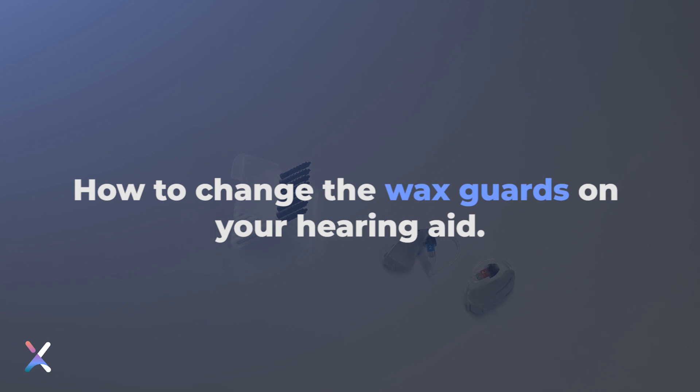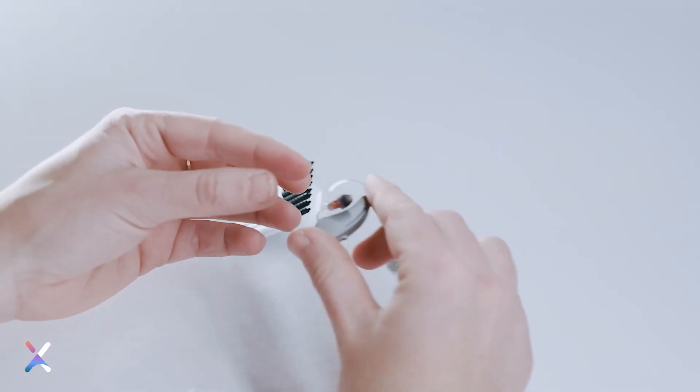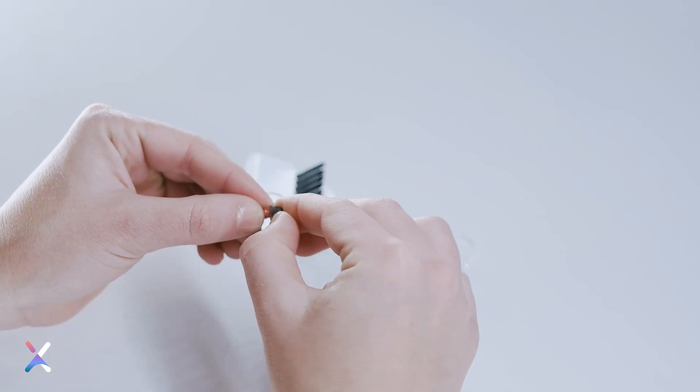How to change the wax guards on your hearing aids. A wax guard replacement tool is included with your new replacement wax guards. In order to replace your wax guard, begin by removing the dome from your hearing aid at the end of the receiver.